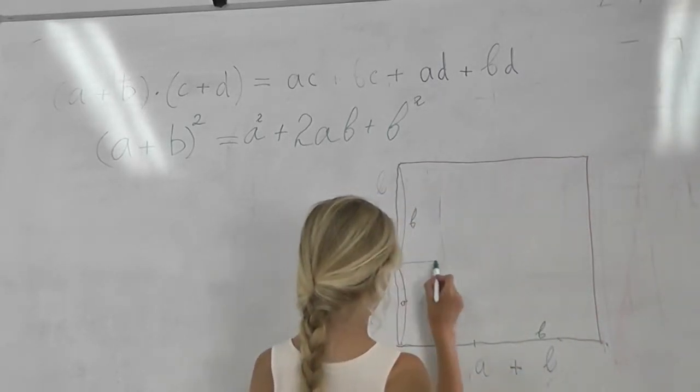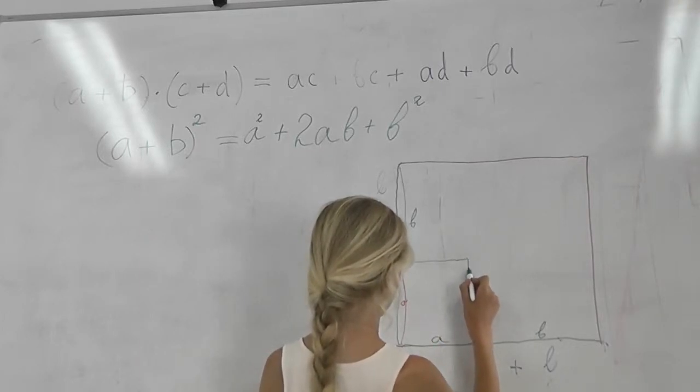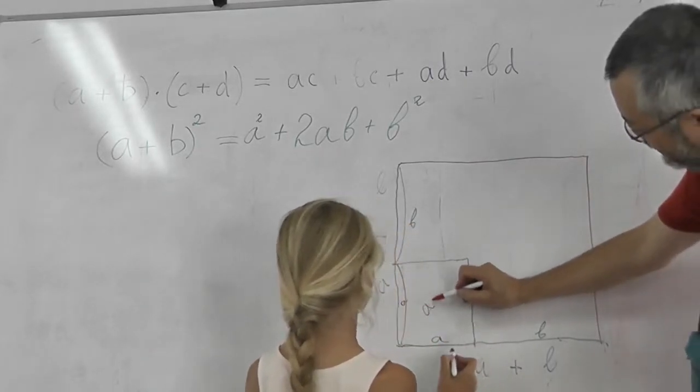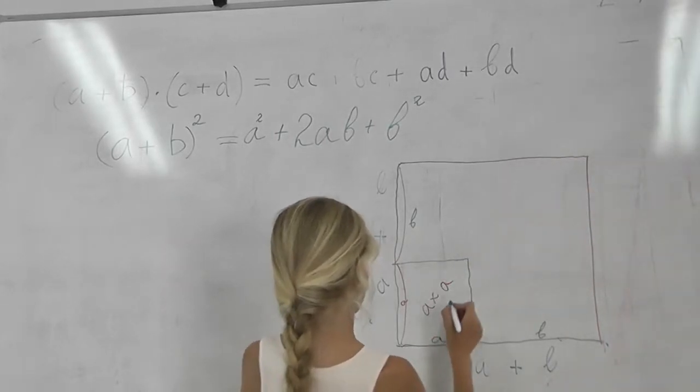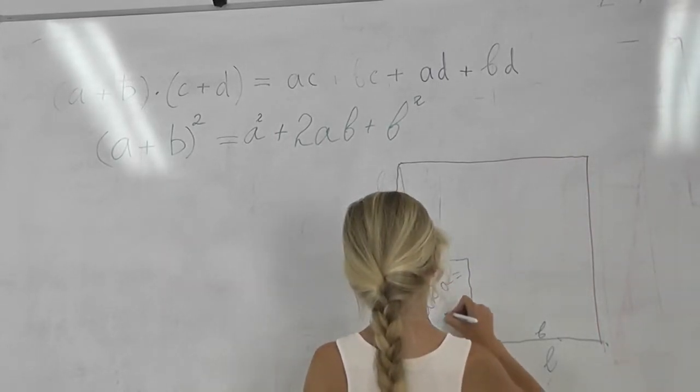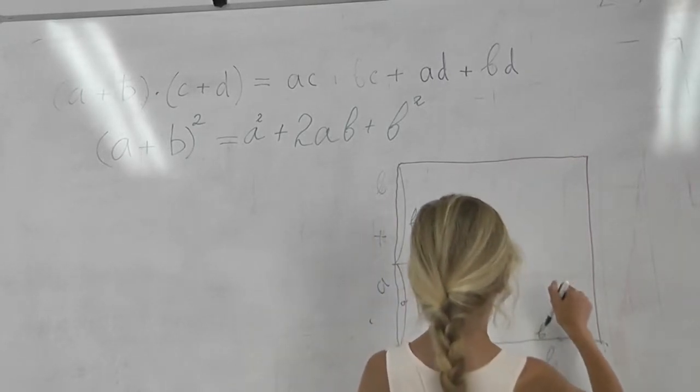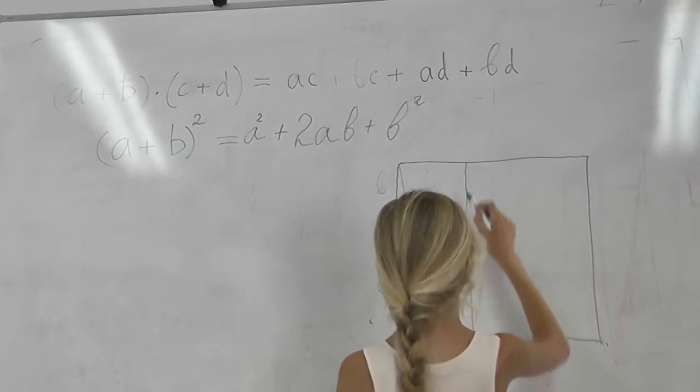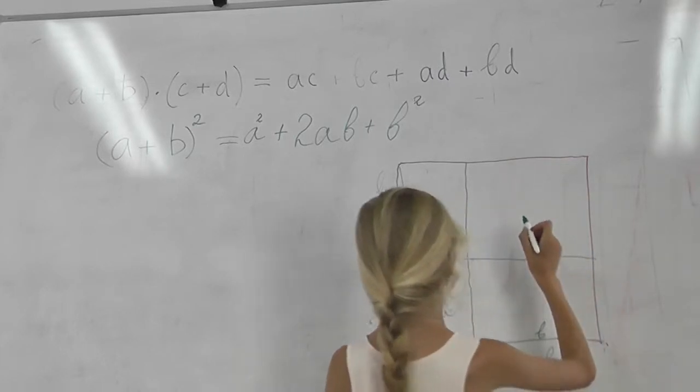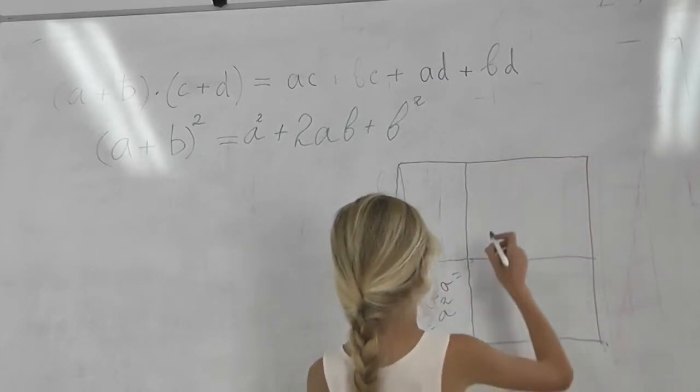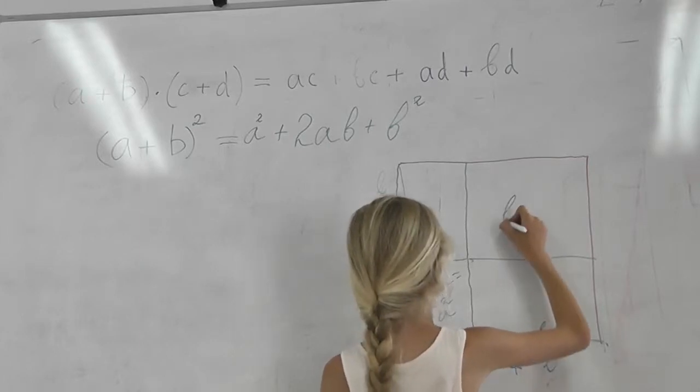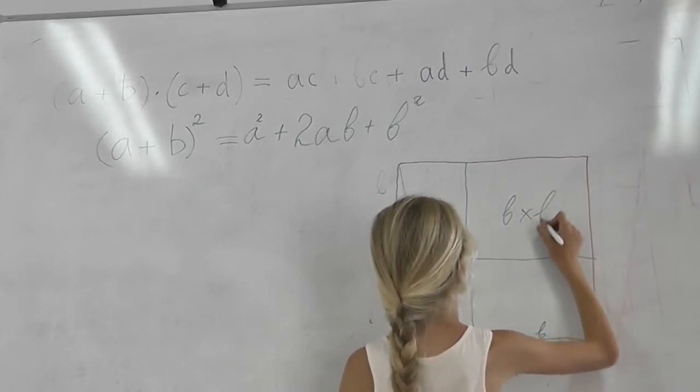This is a square. This is a square, a times a. And this is a square. That's why it's called square. Why a times a is called a square. Because it's the same area of the square. This is a square.